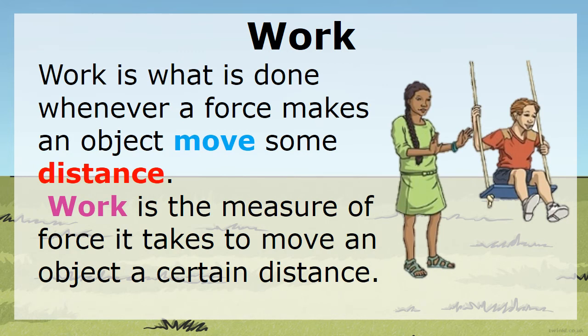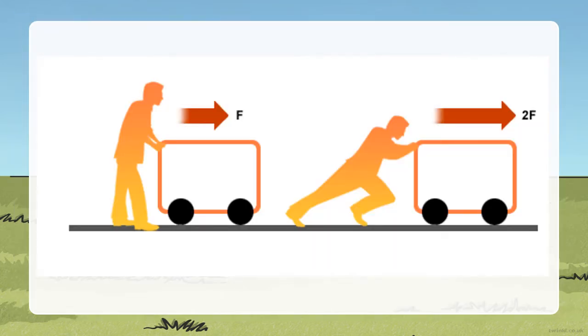Work — what is work? Work is what is done whenever a force makes an object move some distance. Here, you are pushing the swing, and the swing moves from one point to another — that is work. Work is the measure of force it takes to move an object a certain distance, from one position to another.